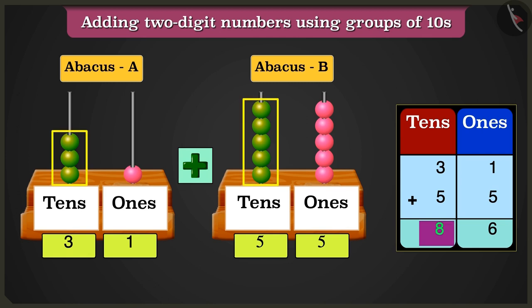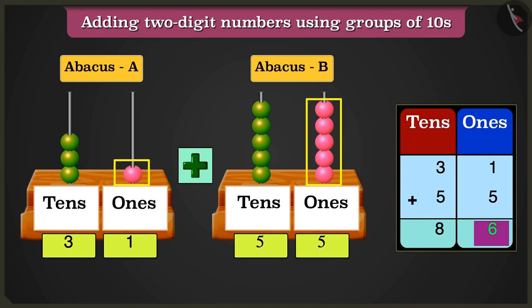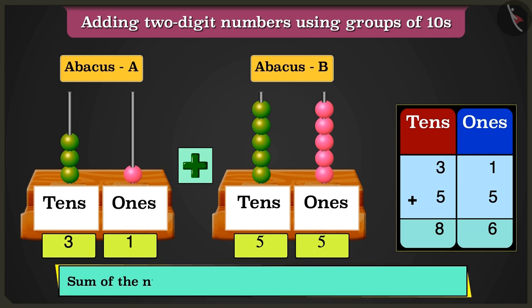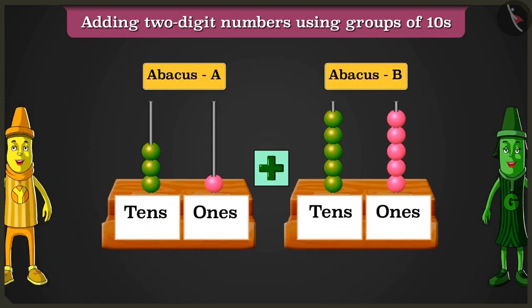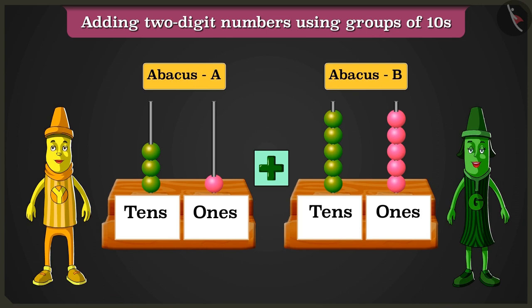So here we have 8 10s and 6 1s. So abacus A and abacus B added together will give us the number 86. Oh wow, well done Greeny. Thank you Yellow.